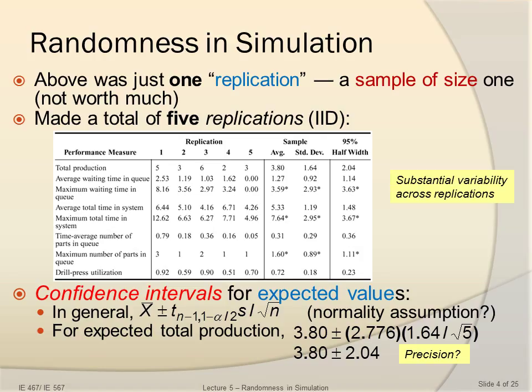In the next five columns, we have the values corresponding to these performance measures computed in different replications. When we average out the replication values — for example, for total production — we get 3.8 as the average of 5, 3, 6, 2, and 3. That's our sample average. We can also get a sample standard deviation for total production, which is 1.64, and we can get a 95% half-width, which talks about confidence intervals. The range for total production goes from 6 in replication 3 to 2 in replication 4 — quite substantial variability across replications.